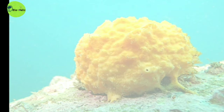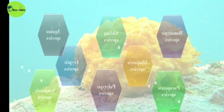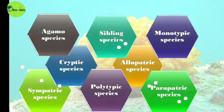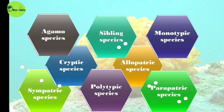Now we move on to the types of species. The important types are: Sympatric species, Allopatric species, Polytypic species, Monotypic species, Sibling species, Parapatric species, Cryptic species, and Agamous species. Let's discuss each one by one.